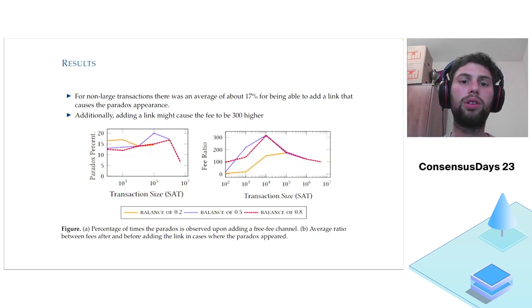As we see, for non-large transactions, transactions of about a dollar or maybe even less, there was an average of 17% for being able to add new channels and cause the paradox increase. Now recall, Layer 2 networks are meant for mainly small transactions, sums of a few dollars. What we show here is that in 17% of the cases, we were able to add a channel which would increase the fee needed to be paid when users use this network.